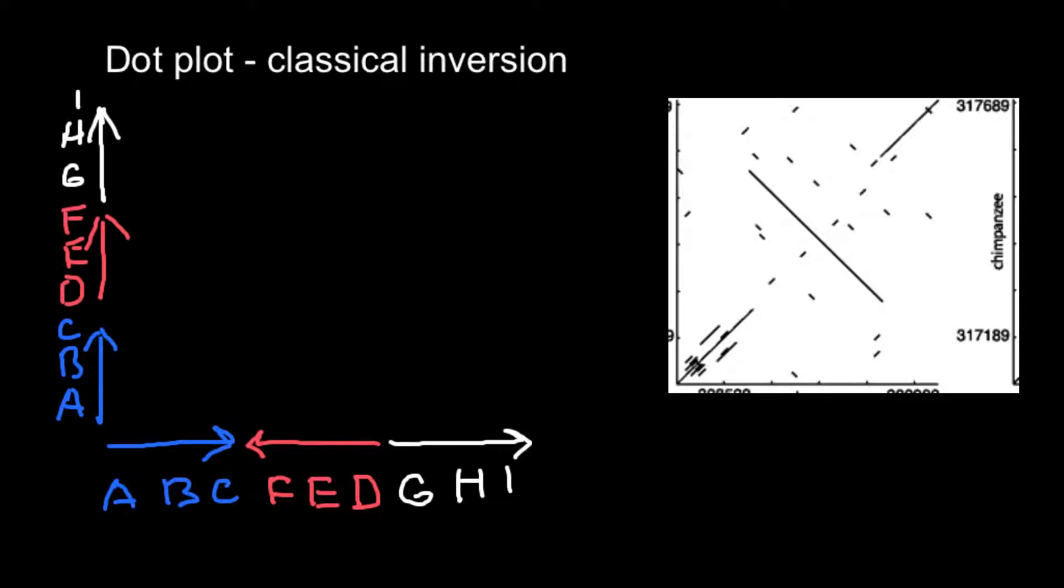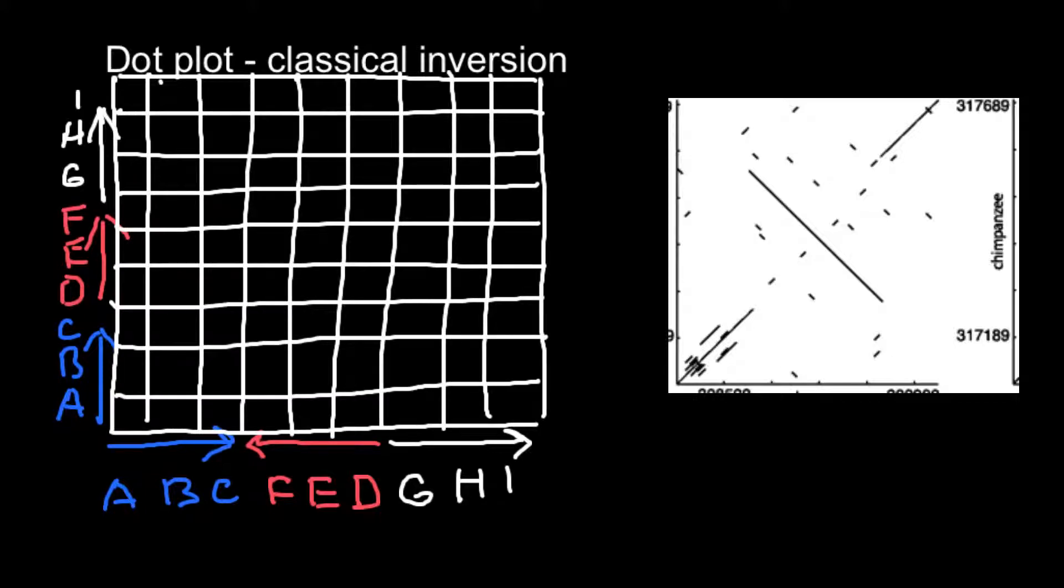So now we build a matrix. I will speed up the video, and here is our finished matrix. So let's start plotting. Here we have a dot here, so that means we put a dot here. So we have a dot here, we have a dot in this cell, and we have a dot in this cell. So this is how we plot fragment A, B, C.